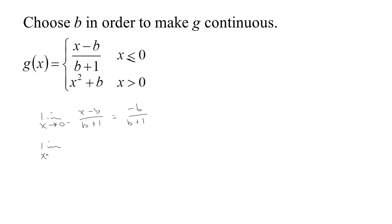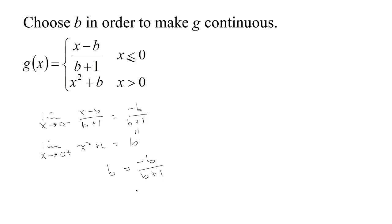If we let x go to 0 from above with g of x, then since x is greater than 0, we're using the function x squared plus b, which equals b. Notice what's essentially happening as I take these limits is I'm plugging 0 into one function and 0 into the other, because that's the point of interest.